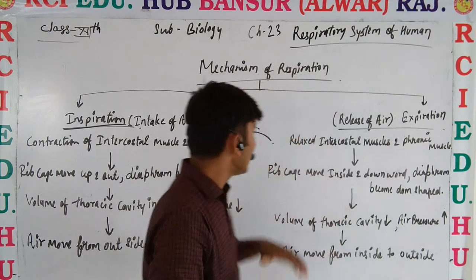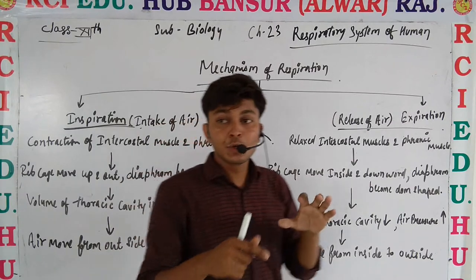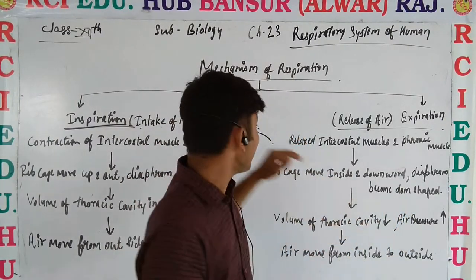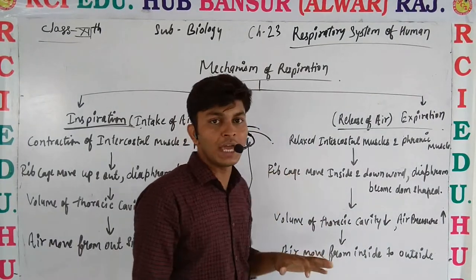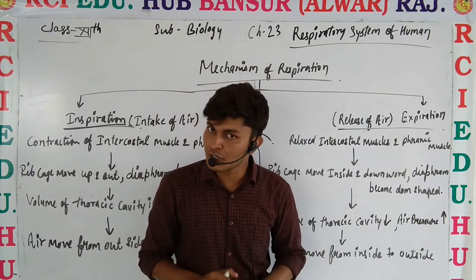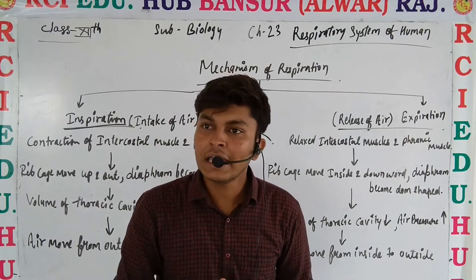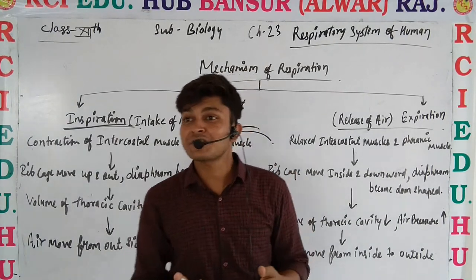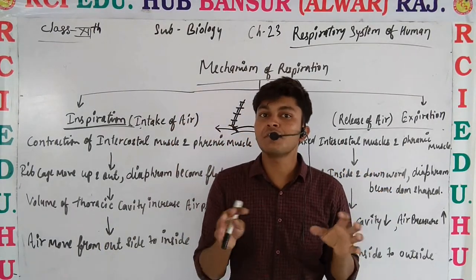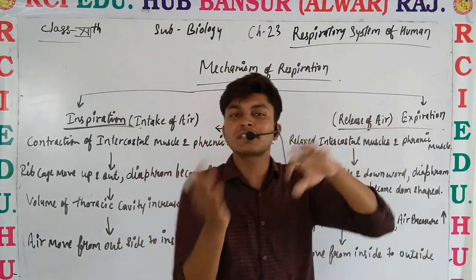Due to contraction, the diaphragm, which was dome-shaped, becomes flat. So the rib cage is expanding outward and the diaphragm is flat, causing the thoracic cavity volume to increase. As volume increases, air pressure inside decreases, while the surrounding air pressure is higher, so air moves from outside to inside.